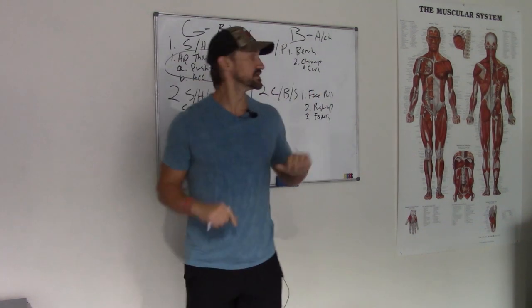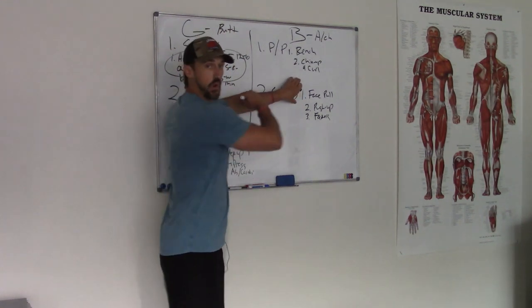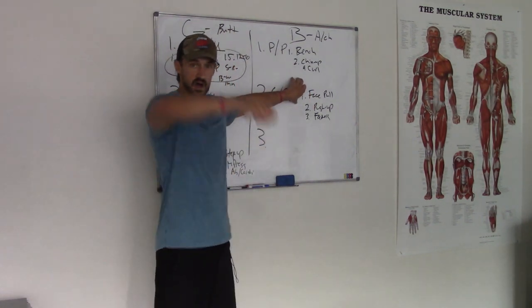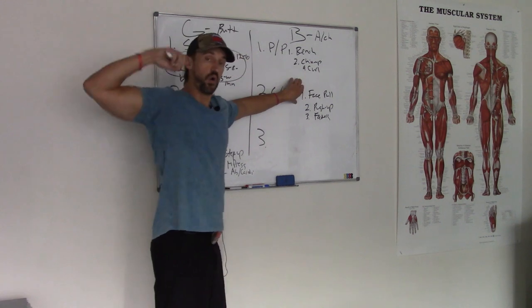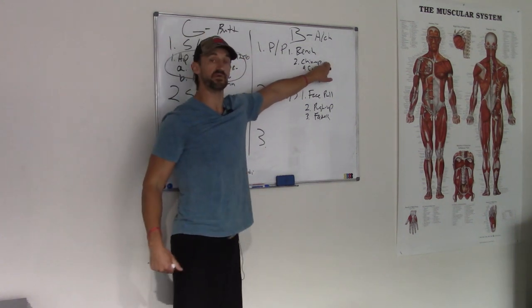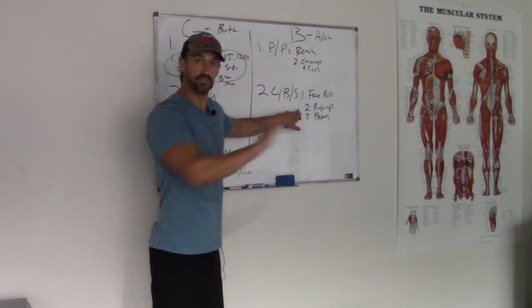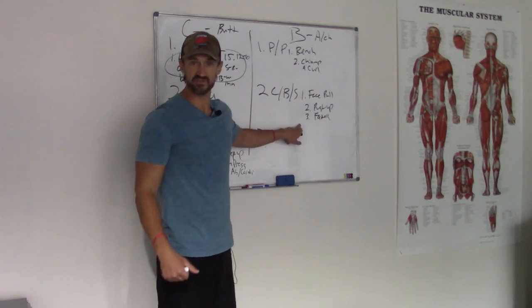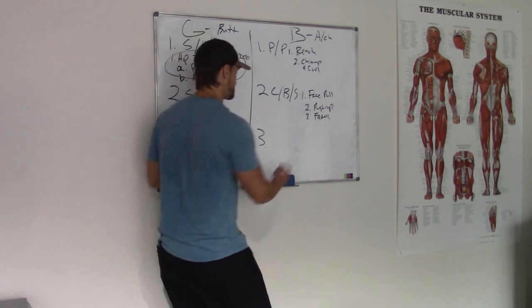And then three would be a farmer's carry. Work on those traps. So the first core pattern of the second group would be pull. Which would be horizontal pull. Here we did a vertical pull. Then we're going to do a push up. And then you're going to do a farmer's carry. Last but not least. Throw some legs in there.